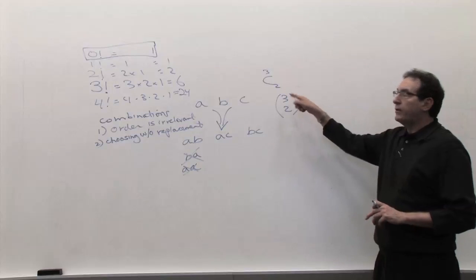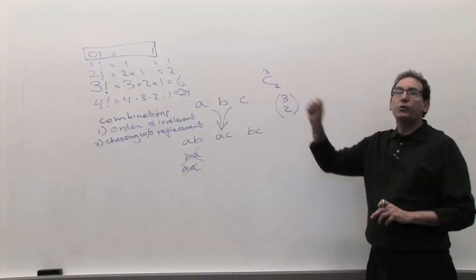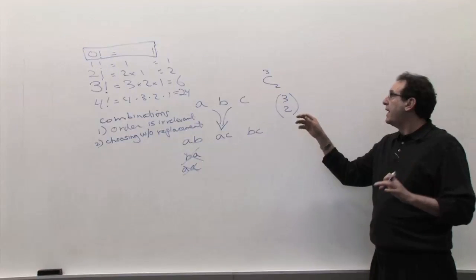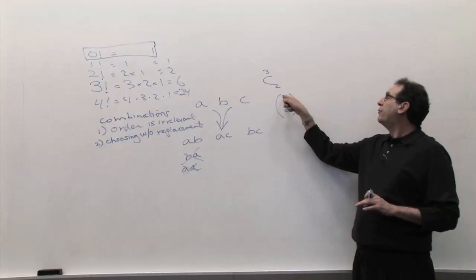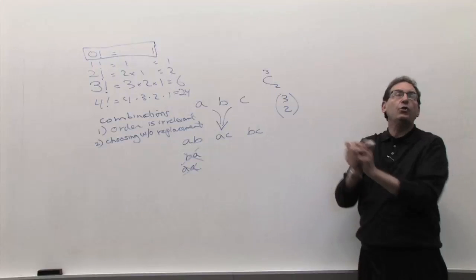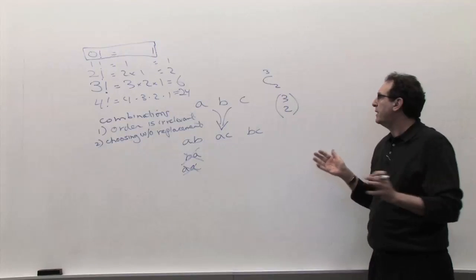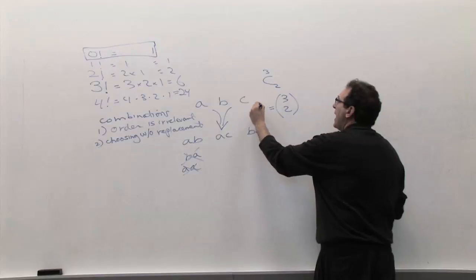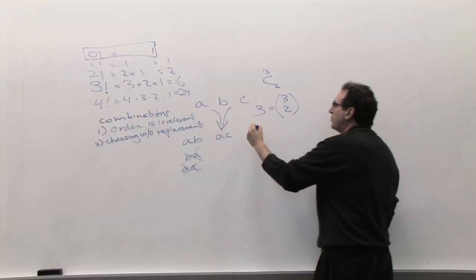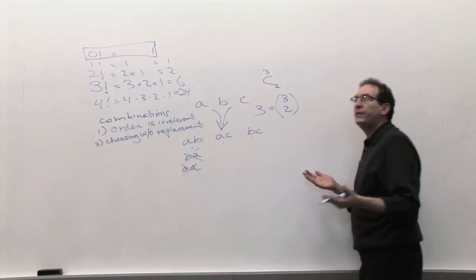So, now, what is three choose? You can read the shorthand way of saying three choose two. The long way to say how many combinations of three objects can you make choosing two at a time? That's the long way to say it. But, we're going to say three choose two, and we know the answer is three. How do we know it's three? Because one, two, three. You can physically see that.